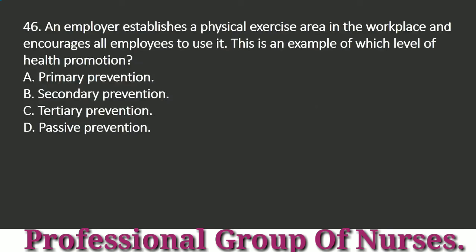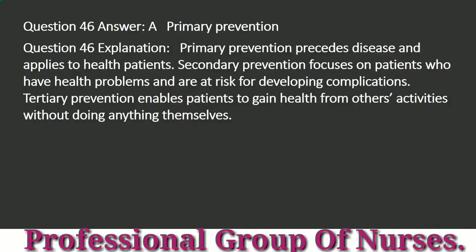Question 46: An employer establishes a physical exercise area in the workplace and encourages all employees to use it. This is an example of which level of health promotion? a. Primary prevention. b. Secondary prevention. c. Tertiary prevention. d. Passive prevention. Answer: a. Primary prevention. Explanation: Primary prevention precedes disease and applies to healthy patients. Secondary prevention focuses on patients who have health problems and are at risk for developing complications. Tertiary prevention enables patients to gain health from others' activities without doing anything themselves.